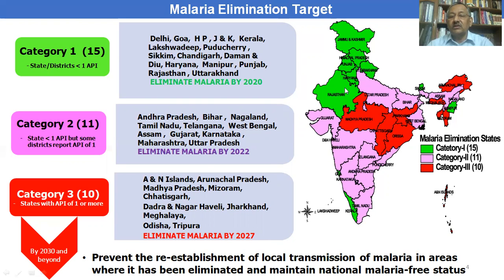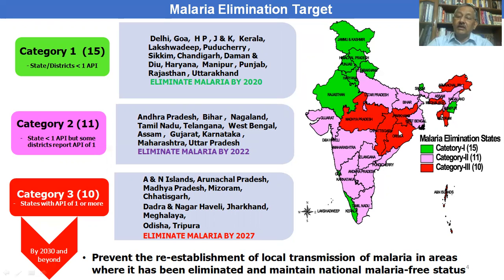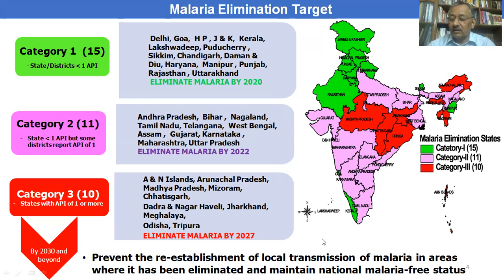Targets have been fixed accordingly — the 2020 target has already been achieved, and the 2022 target is showing very good progress. Category 3, the red color zone, has 10 states, precisely the northeastern states and the central peninsula. These 10 states show high burden with average API above one. All three categorized states must be brought below one API by 2027, and then from 2027 to 2030 they must demonstrate successful prevention of re-establishment of local malaria transmission.